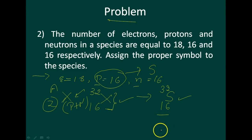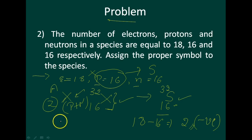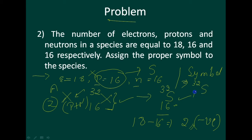The species is not neutral because the number of protons is not equal to the number of electrons. There are 18 − 16 = 2 excess electrons, so it is an anion with a charge of 2 minus. The symbol is sulfur-32 with atomic number 16 and charge 2−, written as ³²S²⁻.